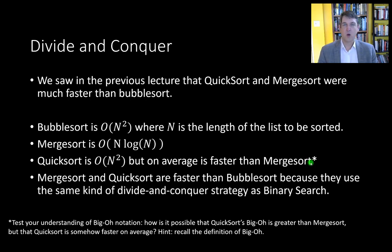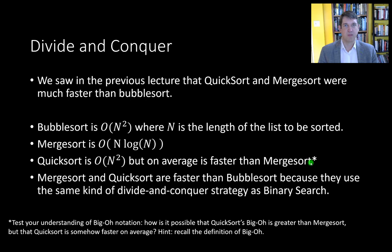Merge sort and quick sort are faster than bubble sort because they use the same kind of divide and conquer strategy as we saw in binary search. I hope you'll start to see that various parts of the course are coming together here. We looked at functional programming, and recursion is certainly something you're going to see a lot of. Recursion underlies both merge sort and quick sort.